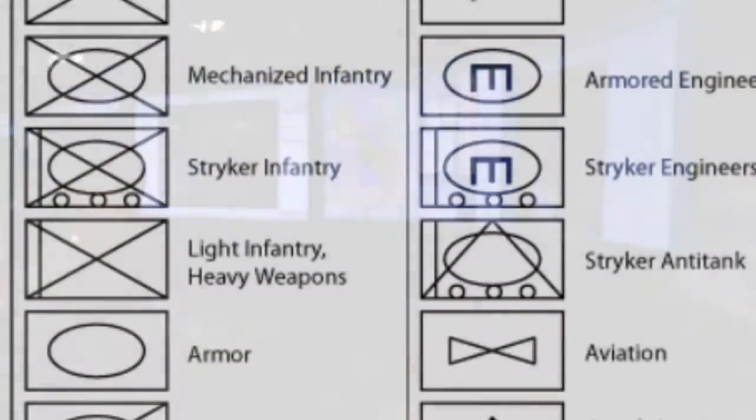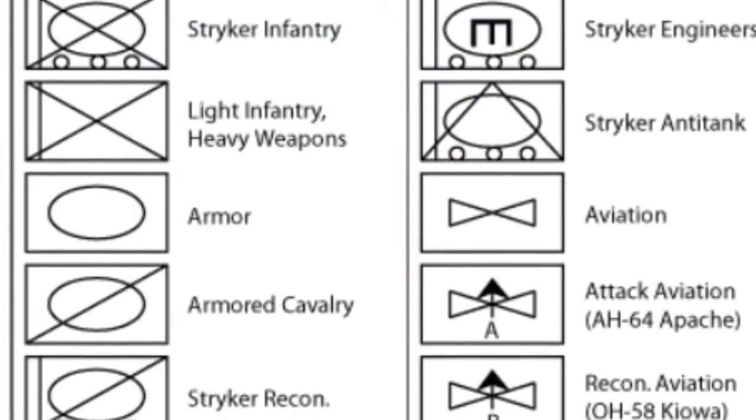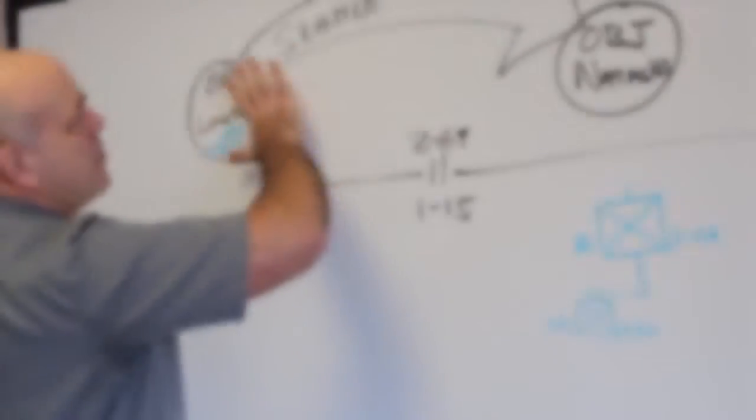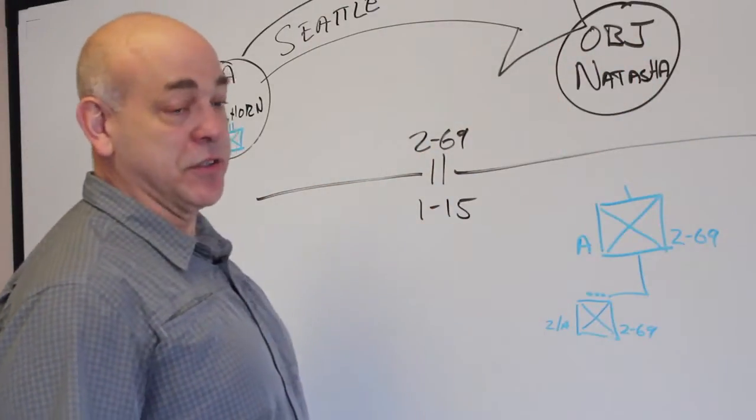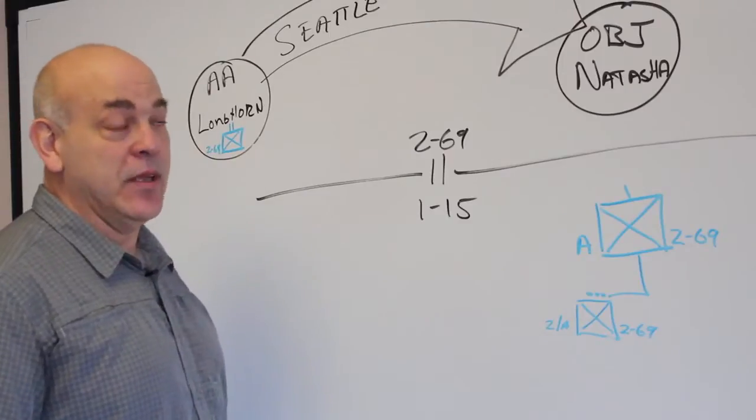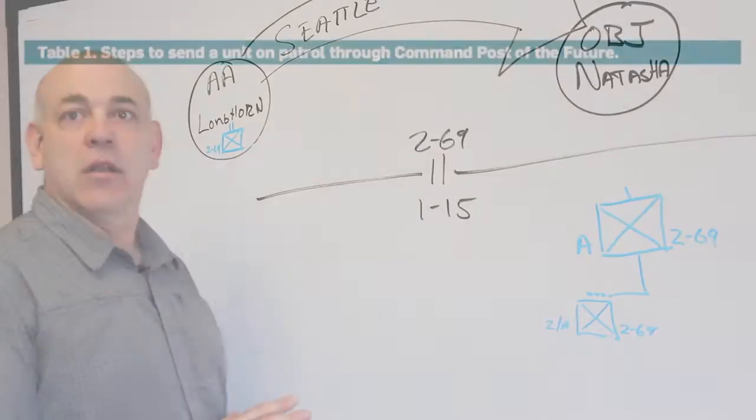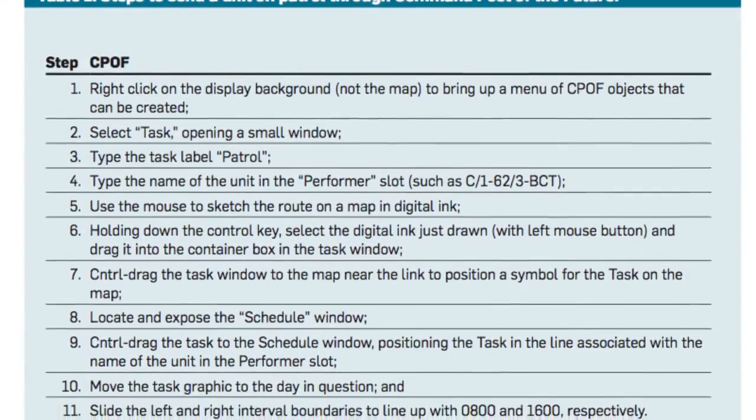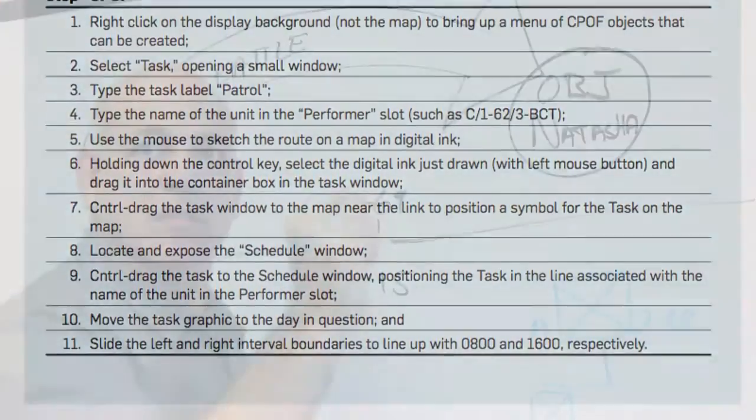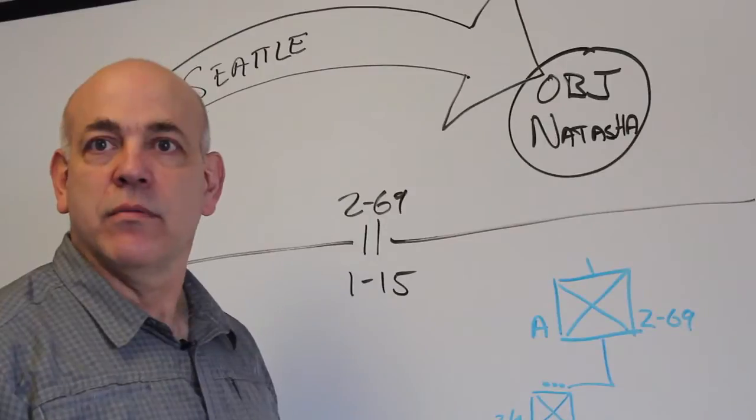This particular plan, if I were to place this in a modern command and control system, could take me an hour if not longer. It's an 11 to 14 step process to enter this named objective, Objective Natasha, into CPOF. Now a company in Seattle named Adapts believes that it has the answer.